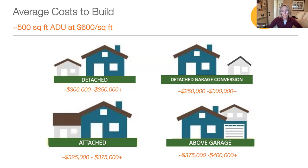Putting an ADU over an existing garage has become a popular way to create a unit without losing yard space, but there are additional costs associated with these units that you need to be prepared for. Finally, please note the square footage price of construction goes down as the size of a unit goes up, because of the intrinsic costs of mobilizing a construction team. Building 800 square feet or more could actually lower the square footage price.